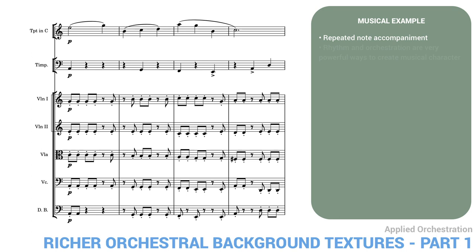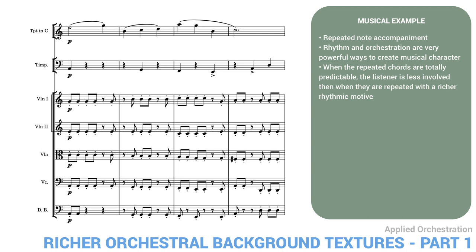The main differences here are the rhythm and the timpani. Rhythm and orchestration are very powerful ways to create musical character. When the repeated chords are totally predictable, the listener is less involved than when they're repeated with a richer rhythmic motive, as in the second version. And for the uneasy character I wanted to create, this motive is better than just the basic repeated notes. The timpani added darker color to the whole. The point here is to play with all the aspects of the music in ways that reinforce the desired character. Of course, this takes time and thought.